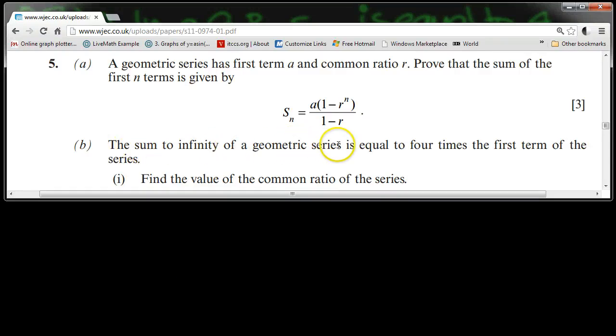The sum to infinity of a geometric series is equal to four times the first term of the series. Part one, find the value of the common ratio of the series.